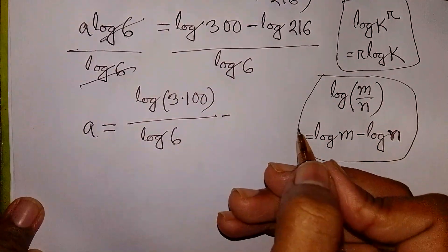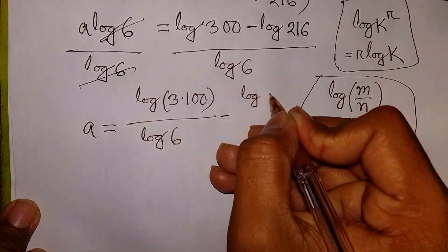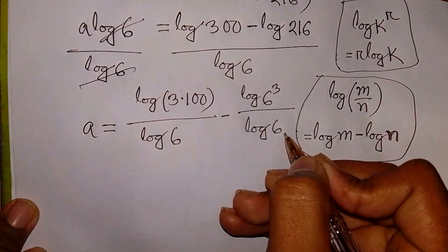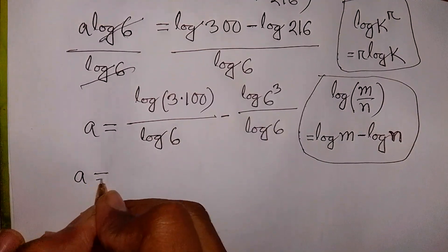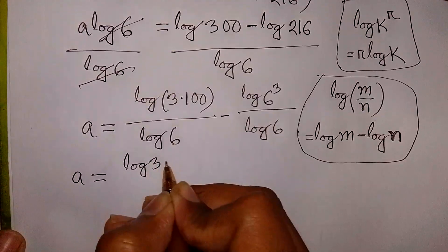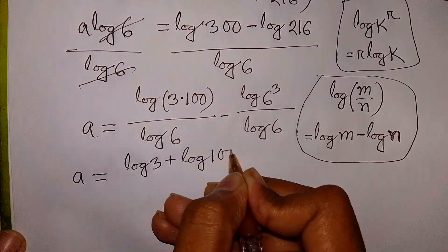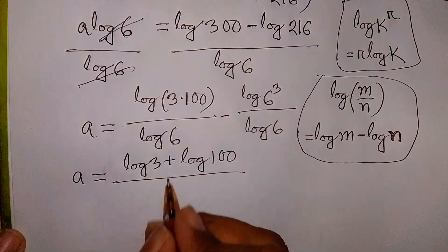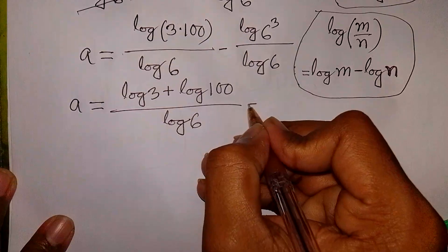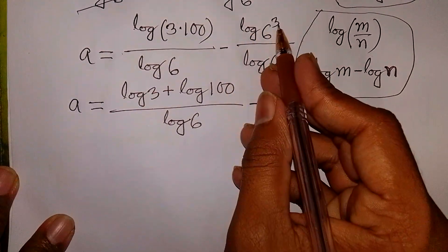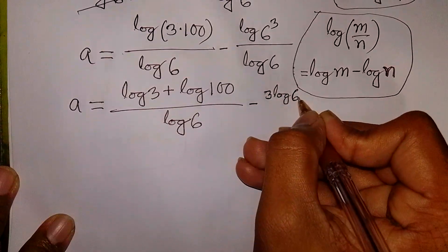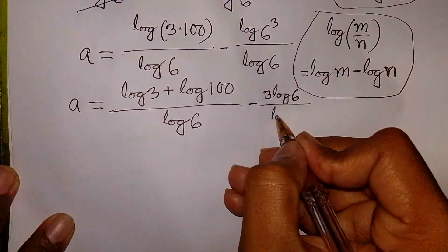We subtract log of 216, which is the same as log of 6 to the power 3, all over log 6. The power 3 moves to the front, giving 3 log 6 in the numerator. This 3 log 6 divided by log 6 simplifies, and log 6 cancels out.